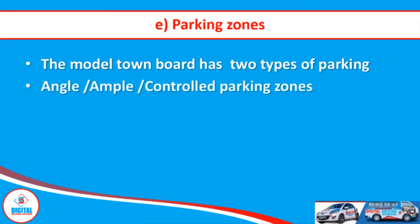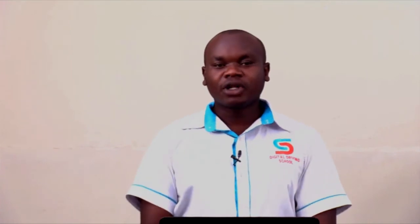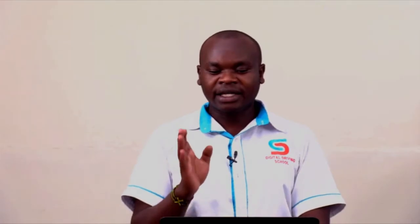Our model town board has two types of parking. These are: one, angle parking, also known as ample parking or the controlled parking zone. Two, we have the flash, also known as parallel parking or the uncontrolled parking. In angle parking, vehicles flow in one direction — it's like a one-way traffic in angle parking.